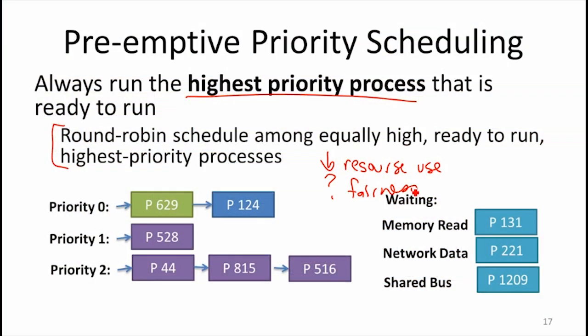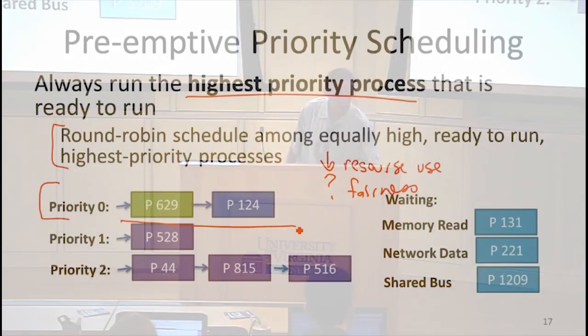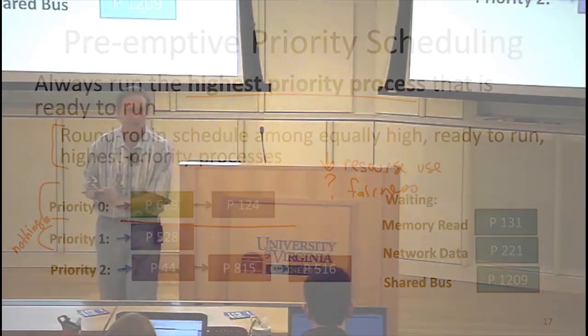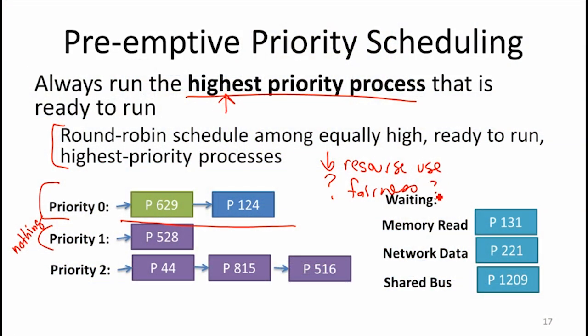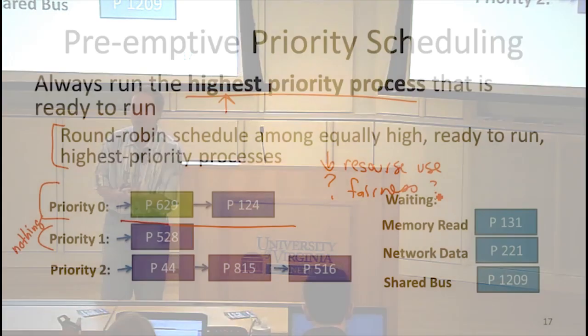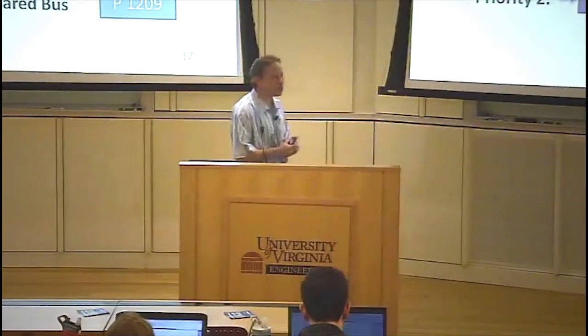What are bad things that could happen with priority preemptive scheduling? If priority zero processes never get stuck waiting for I/O, never go to sleep, never are in a state where they don't have instructions to run, they're going to get all of the CPU, and the priority one process gets nothing. Is that fair? It depends what your priorities mean. Fairness is not well-defined — if you define fairness as the highest priority process getting everything before you give anything to a lower priority process, that's certainly what fairness means in lots of real-world situations. We don't have a good definition for fairness here, and certainly it is undesirable if low-priority processes never get to run.